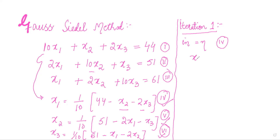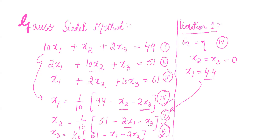We assume x2 equals 0 and x3 equals 0 — you can take any initial value such as 0, 1, or 2. Substituting x2 equals 0 and x3 equals 0 into equation 4, the value of x1 equals 44 divided by 10, which is 4.4. Now, with x1 equal to 4.4, we substitute into equation 5 while x3 remains equal to 0 to find x2.